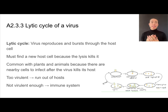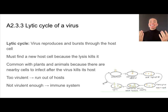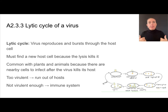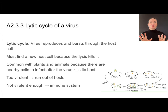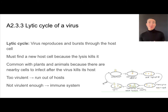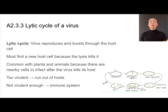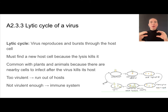In the lytic cycle, the virus reproduces and bursts through the host cell, meaning it needs to find a new host cell because it just killed the previous one. This is really common in plants and animals, which have trillions of cells nearby to infect. If something is too virulent, it kills host cells quickly and runs out of hosts. If not virulent enough, the immune system will detect and destroy it. The most successful viruses maintain a medium range of virulence.